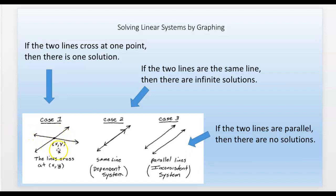There are three different cases. If the two lines cross at one point, there is one solution — this is normally what happens when two lines don't have the same slope. Sometimes, though, there are two different equations that represent the same line, one right on top of the other, so they have an infinite number of solutions.